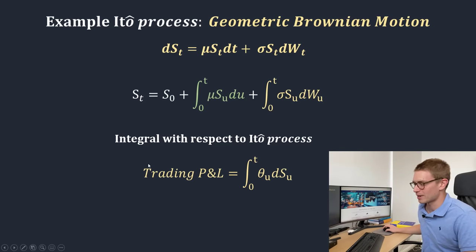What is special about Ito calculus? Why is it different from normal calculus? It's very important to remember that this Brownian Motion stochastic process has quadratic variation, which is accumulated over each time period. This quadratic variation is the important distinction that makes the calculus a little bit different.